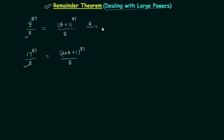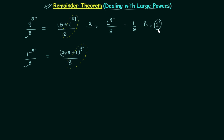By splitting the numerator this way, we can directly write down the answer. The remainder will depend on the remainder of 1 raised to power 87 divided by 8. We already know 1 raised to any power is going to be 1, so 1 raised to power 87 is 1. Therefore 1 divided by 8 gives a remainder of 1.